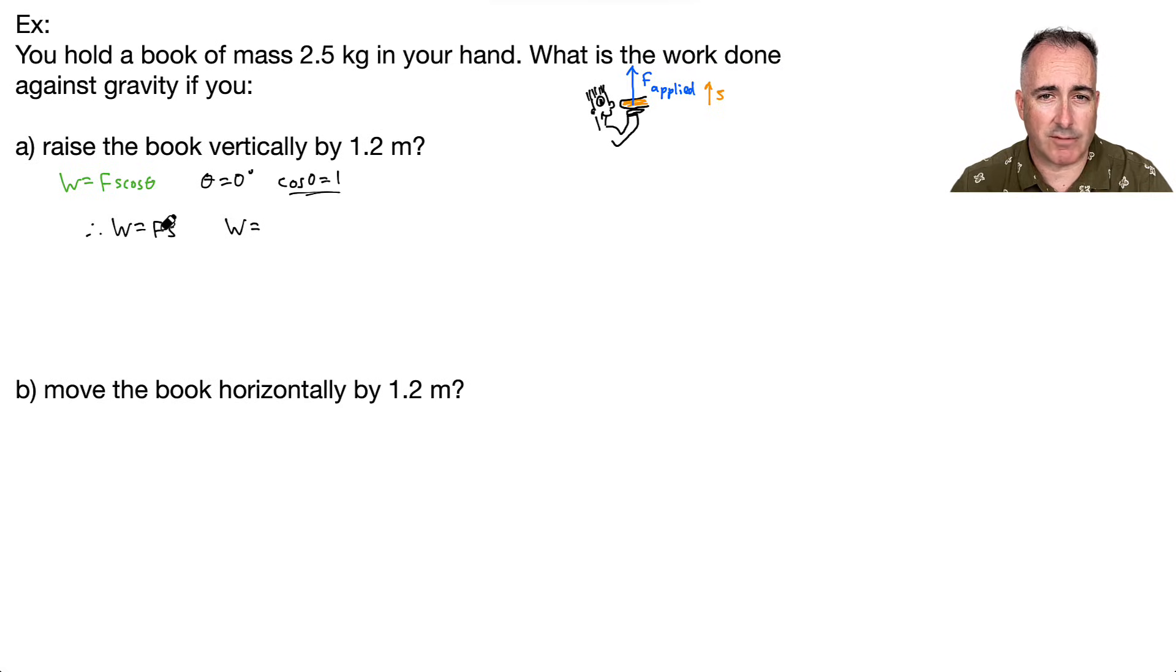The work is going to be the applied force. This force has to be equal and opposite the weight of the book, in other words mg. So work equals mg times S, which is the displacement.